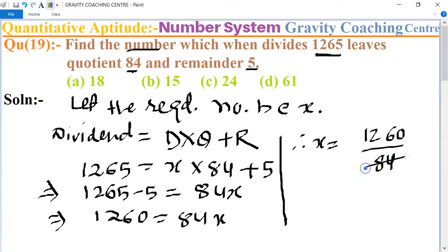First, we cancel by table of 4. Now we divide it by table of 7. And now cancel by table of 15.